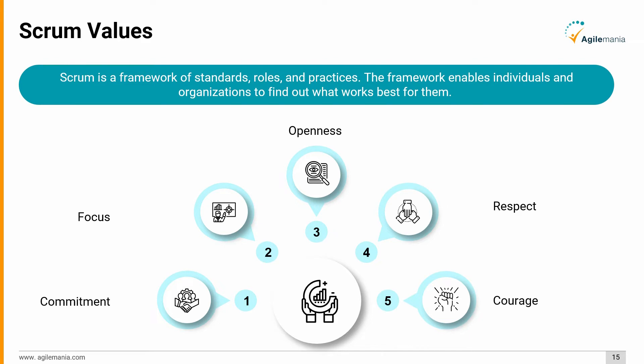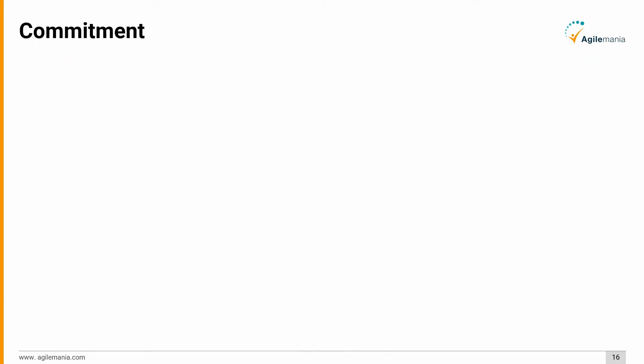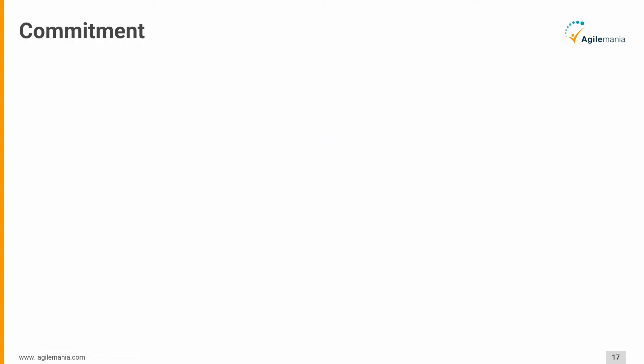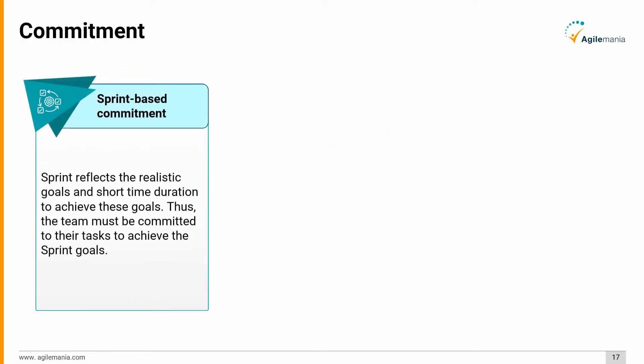First, commitment: Scrum teams must be committed to progress and willing to set practical objectives and stick to them. This is a team activity where you are accountable to work together and conform to commitments. Sprint-based commitment means the sprint reflects realistic goals within a short time duration, and the team must be committed to their tasks to achieve the sprint goals.